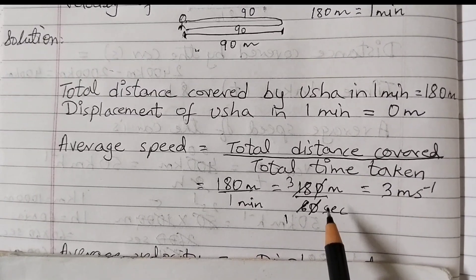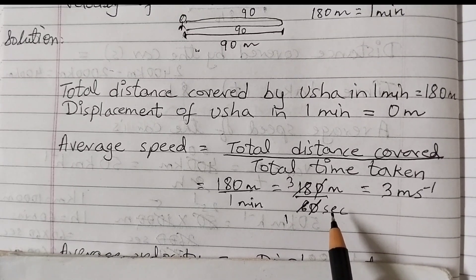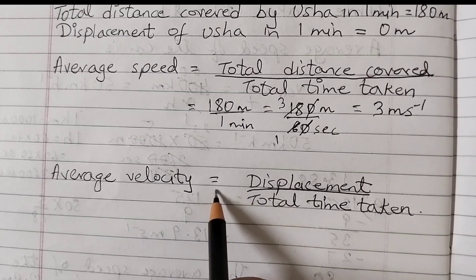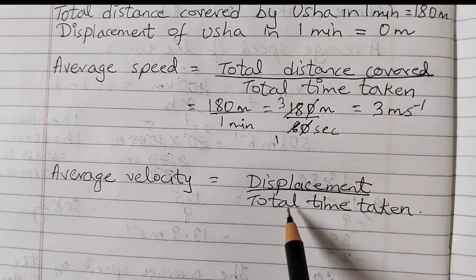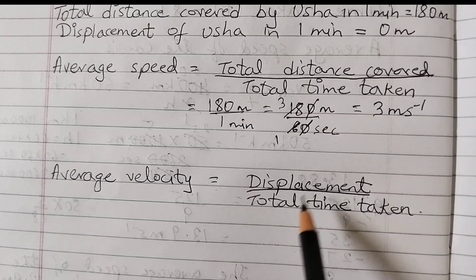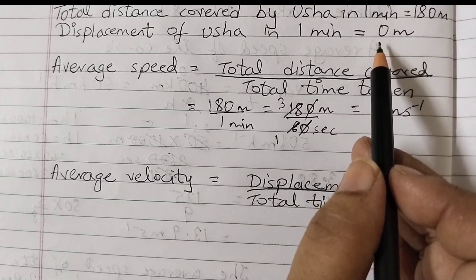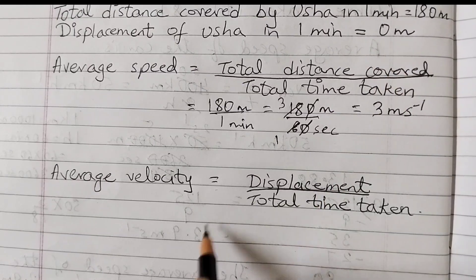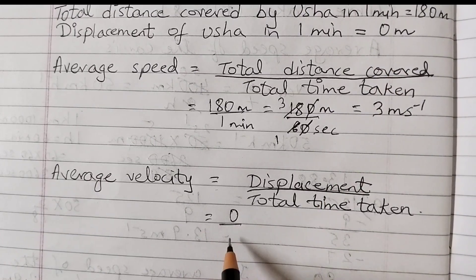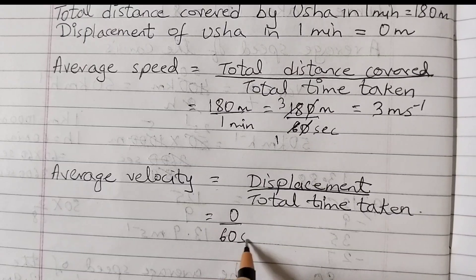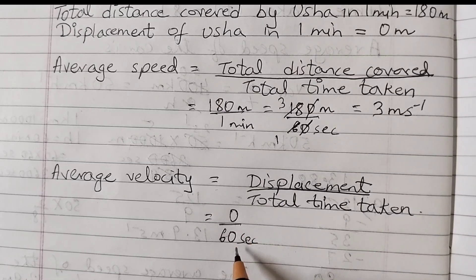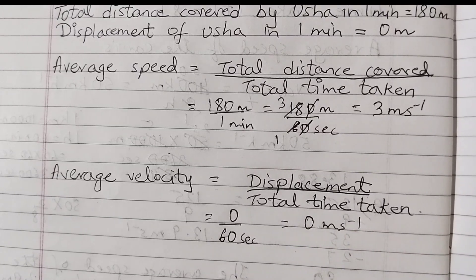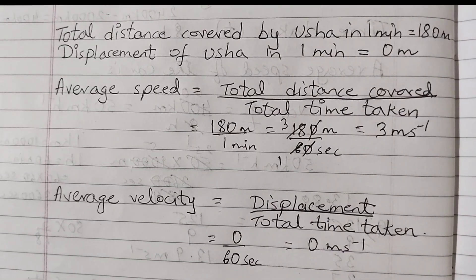Next we will find the average velocity. Average velocity equals displacement divided by total time taken. Displacement here is 0 because the starting point and the end point are the same. So 0 divided by 1 minute — or 60 seconds — equals 0 meters per second, since 0 divided by any number is 0.